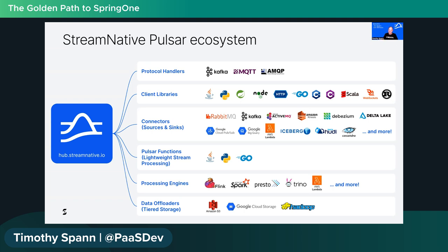Pulsar is written in Java, so Java is the primary library with the newest features. C++ and Go are also very performant. Python support is first class. Spring support just got approved, sitting on top of the Java libraries but making things much easier. Node.js, HTTP/REST, Go, C#, Scala, and WebSocket clients are also available — even a simple web page can consume and produce messages to Pulsar via WebSockets.